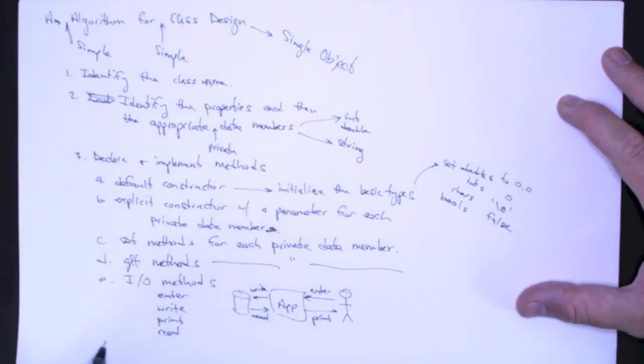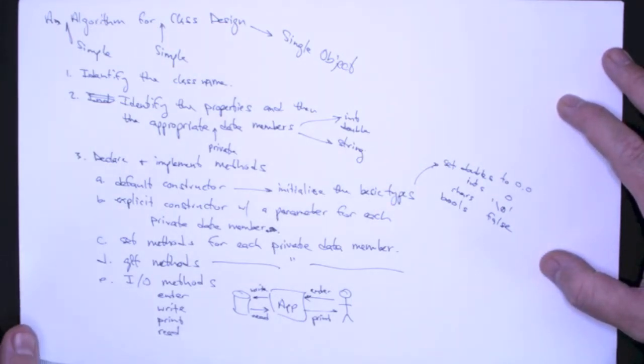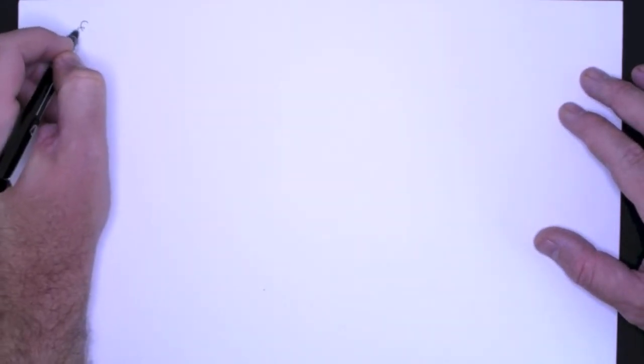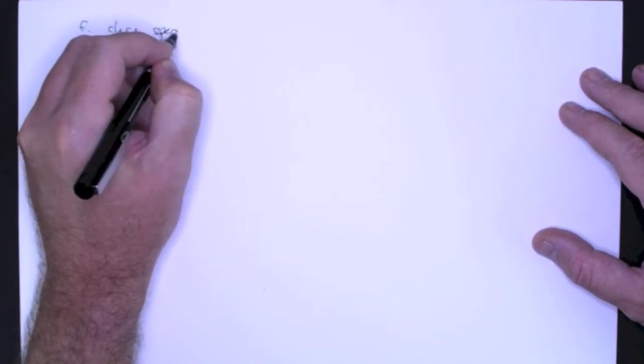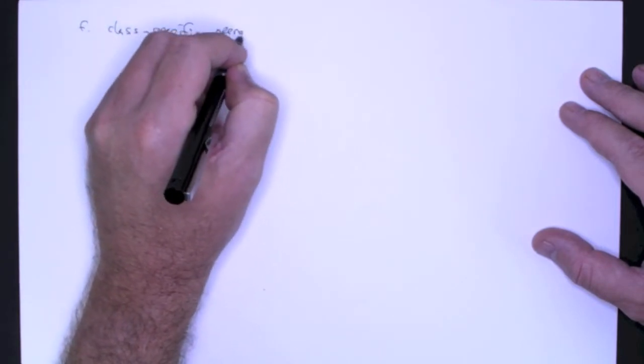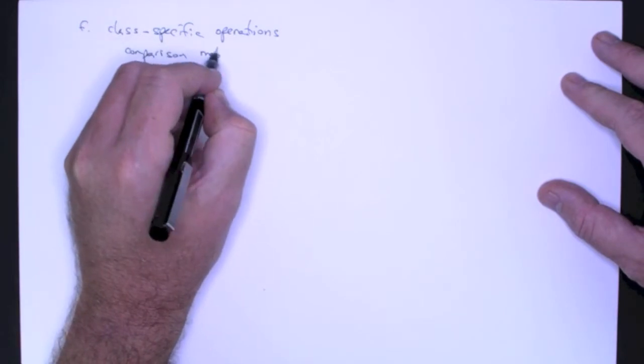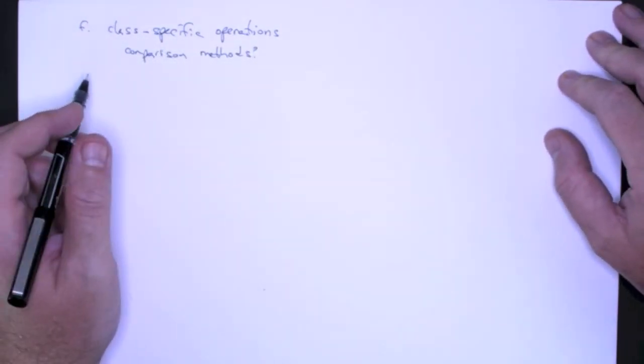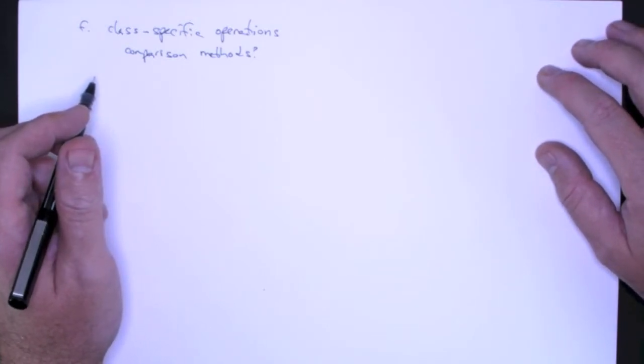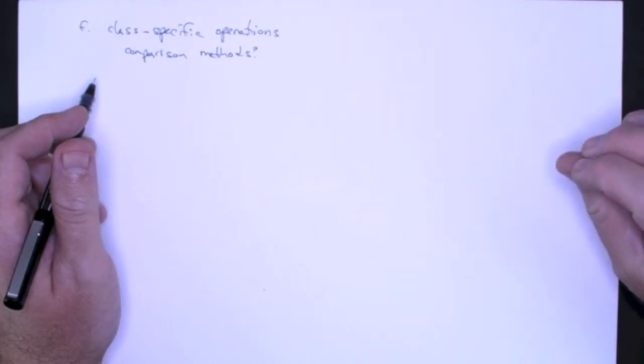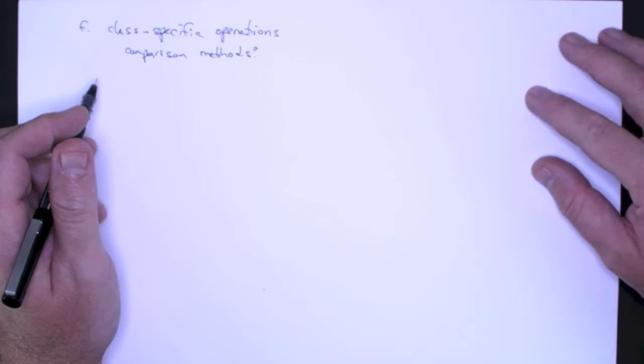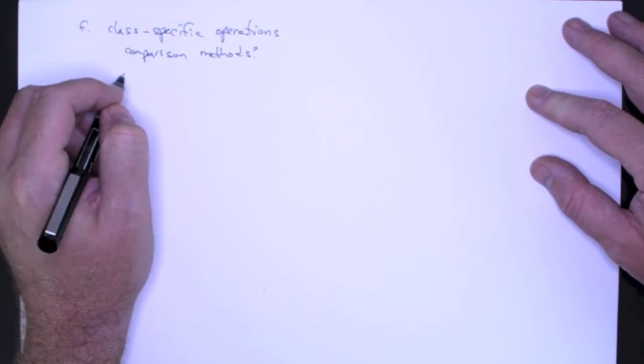Then I would look for any kind of other operators. So, for example, I guess what I would say, we're on F now. So what about class specific operations? So comparison methods. Do you need to be able to compare to see if one object is less than another? For some objects that's not going to make any sense. It doesn't make any sense that student A is less than student B.